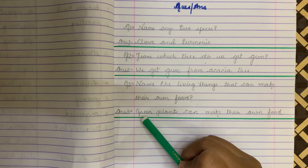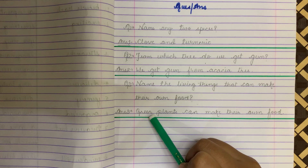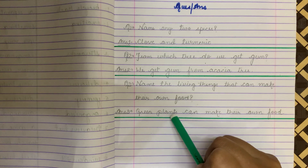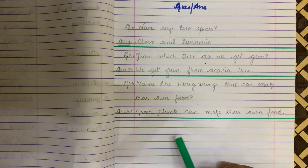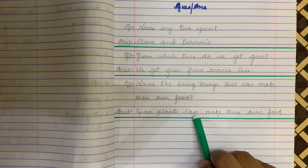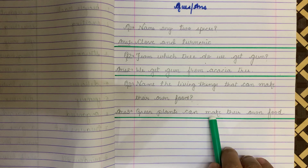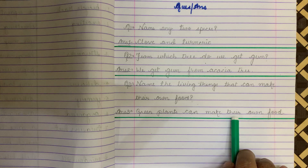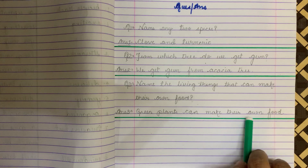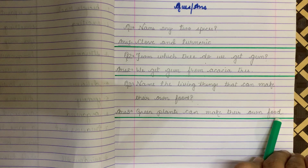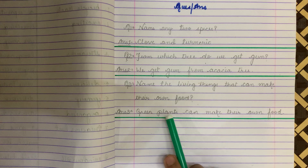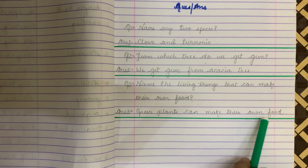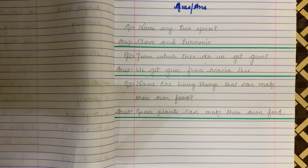Green — G-R-double-E-N — green, P-L-A-N-T-S — plants, O-W-N — own, F-double-O-D — food. Green plants can make their own food. Leave one line and draw a line with a sketch pen.